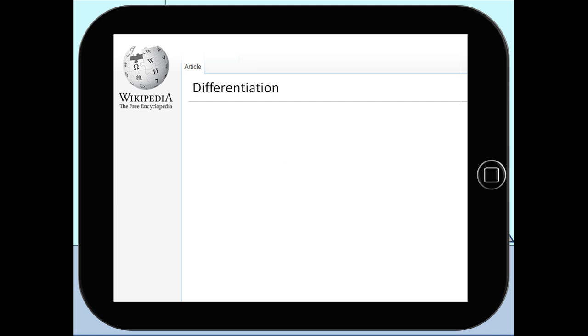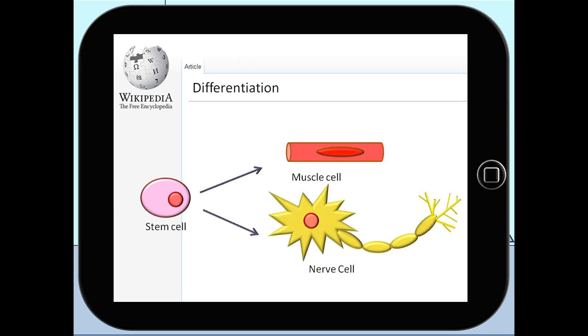The second function is differentiation. This means that the stem cell can differentiate into a specialized cell like a muscle cell or a nerve cell.